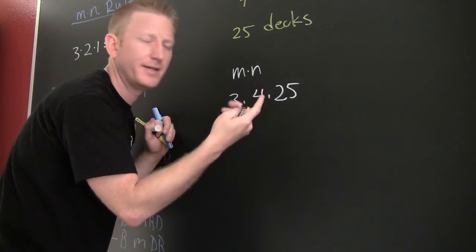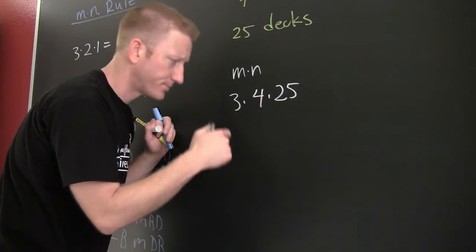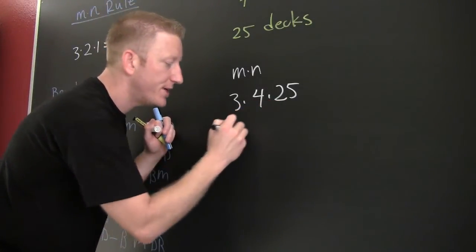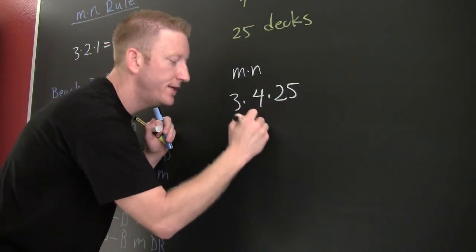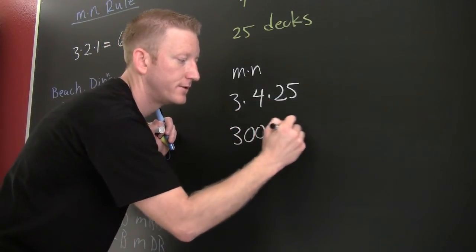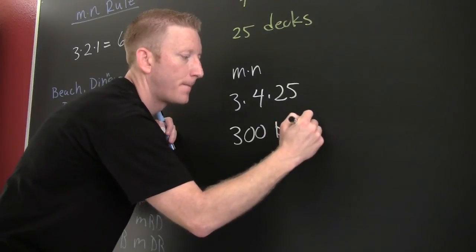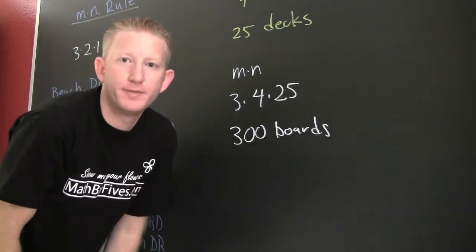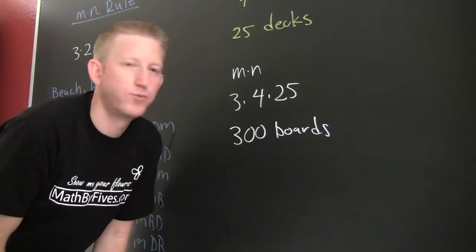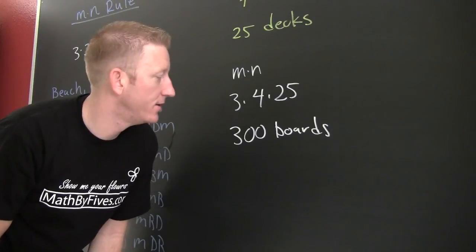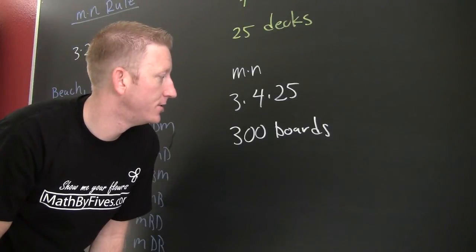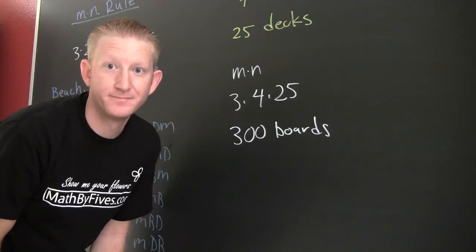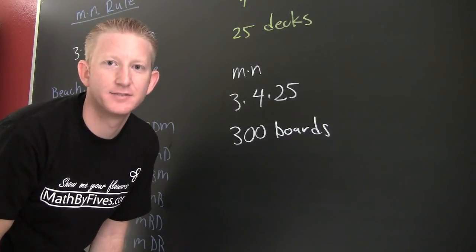These choices are unrelated to each other. So that's three hundred different boards. Now you're in the marketing department of this radical company and you can say: we have three hundred boards to choose from. That's quite the selection.